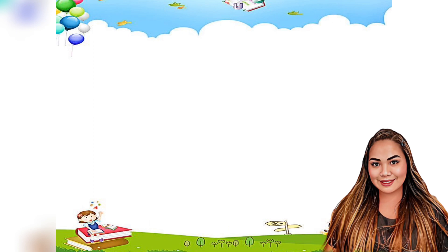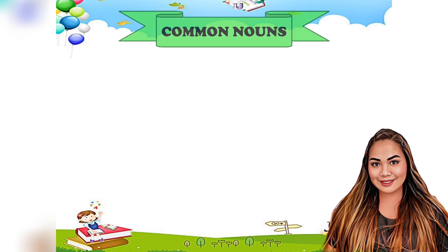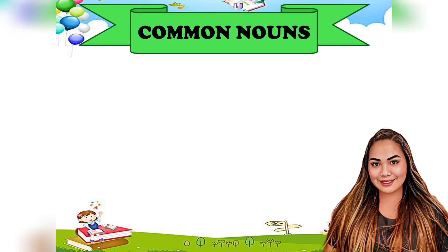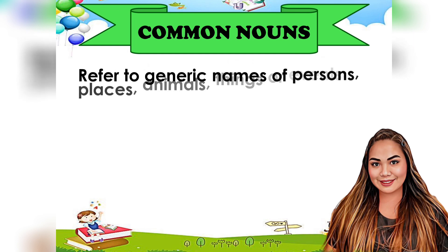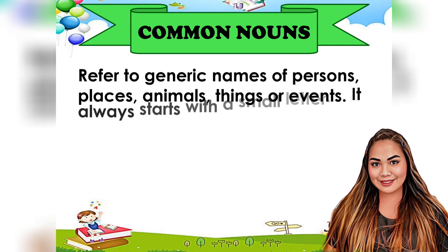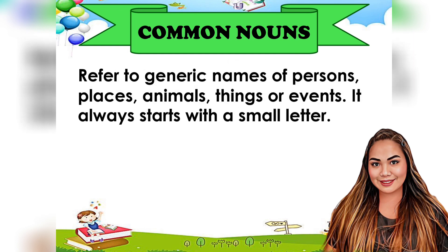The second type are common nouns. These refer to generic names of persons, places, animals, things, or events. It always starts with a small letter. Examples: